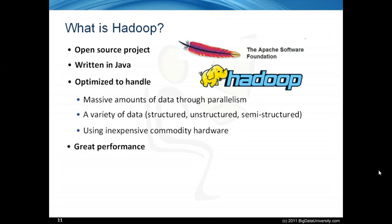However, it is a batch operation handling massive quantities of data, so the response time is not immediate. As of Hadoop version 0.20.2, updates are not possible, but appends will be possible starting in version 0.21. Hadoop replicates its data across different computers so that if one goes down, the data are processed on one of the replicated computers.